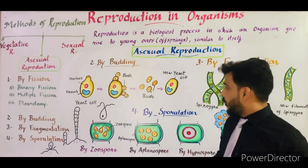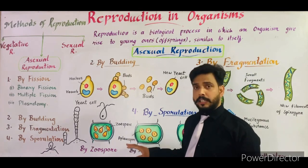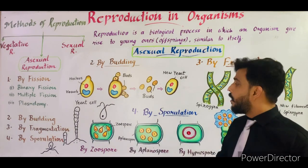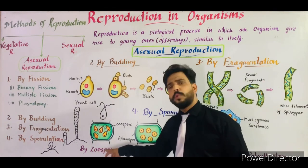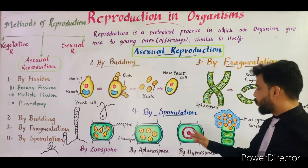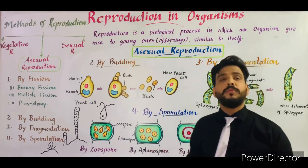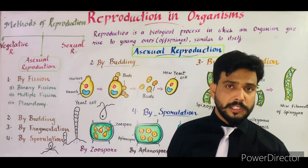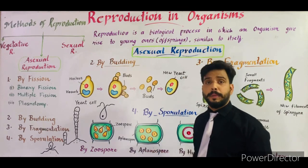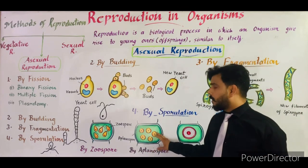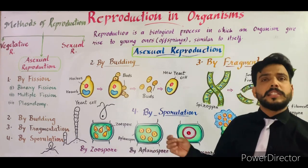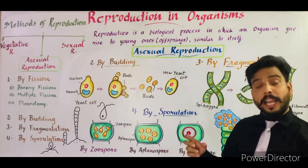The second spore type is the aplanospore. It is not pear-shaped — it is rounded — and it forms only during unfavorable conditions. Zoospores form during favorable conditions, while the remaining three spore types — aplanospores, hypnospores, and palmella stage — form during unfavorable conditions. In aplanospore formation, the cytoplasm contracts and the nucleus divides into numerous segments, each accumulating cytoplasm.